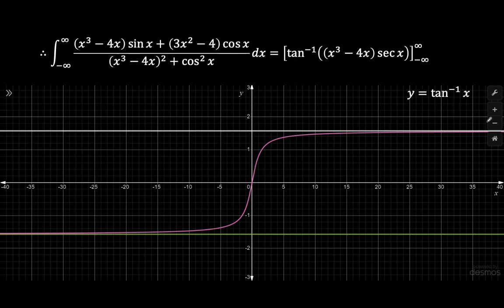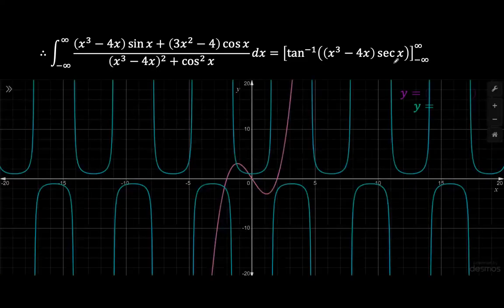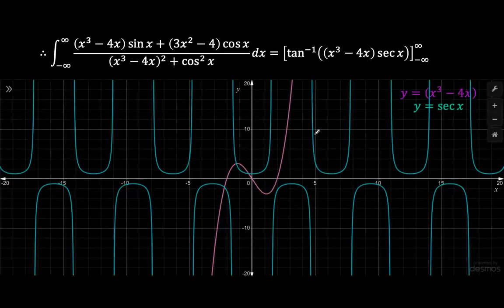Now, how does x³ minus 4x·sec(x) behave? For x³ minus 4x alone, it rapidly tends to negative infinity in the negative direction, crossing zero at x = -2, x = 0, and x = 2, then rapidly going to positive infinity. sec(x) is the up-and-down flip-flopping of a U-shaped curve. When we multiply these two curves together, this flip-flopping rapidly goes to infinity, with zero crossings at x = -2, 0, and 2.